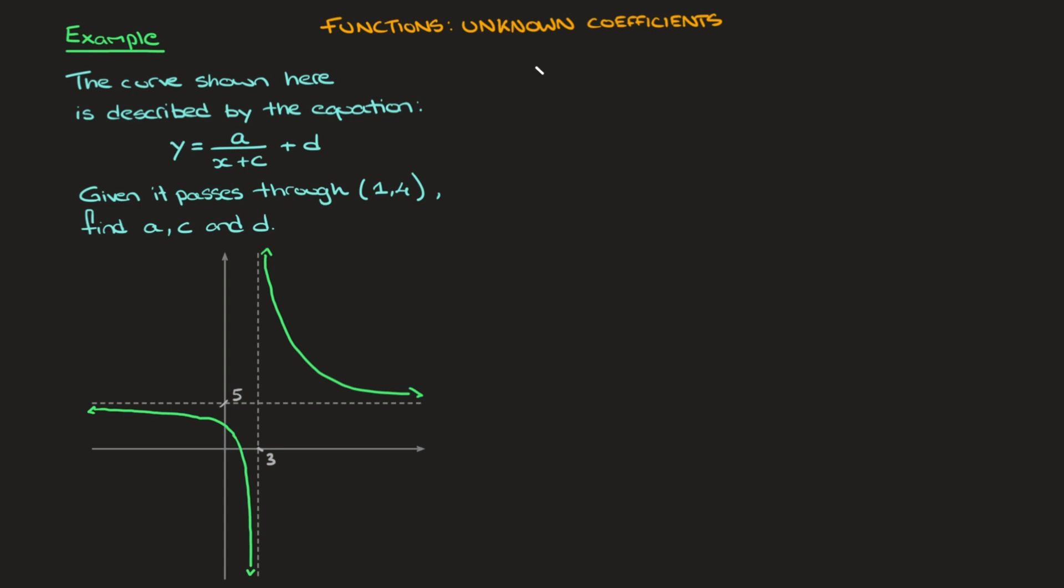We know that this curve has an equation y equals a over x plus c plus d. And for this type of function, rather than finding the coefficients in alphabetical order, I'm going to start by focusing on the denominator with the coefficient c, as well as this plus d that's being added here. And here's the idea.